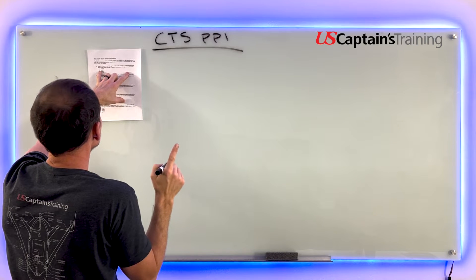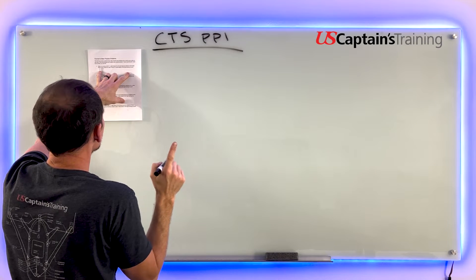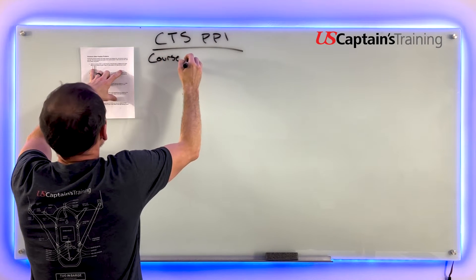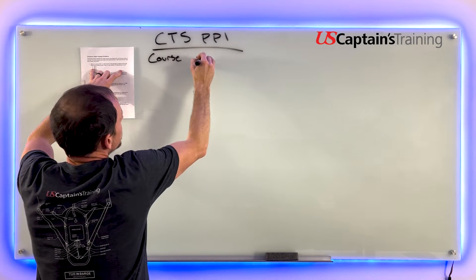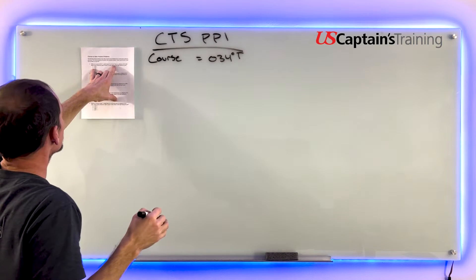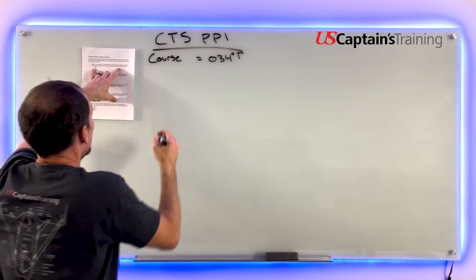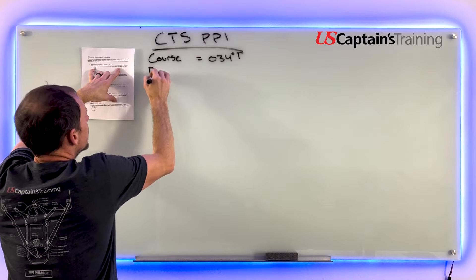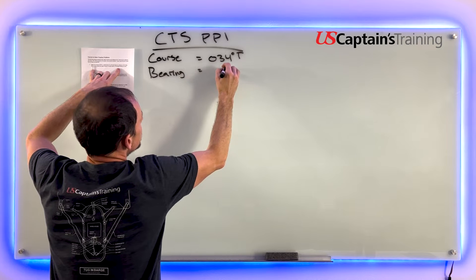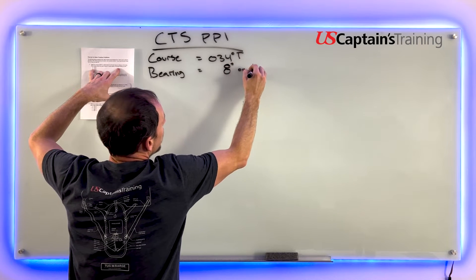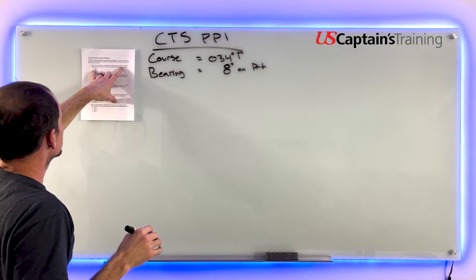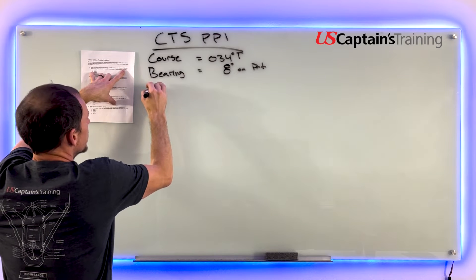A light bears 8 degrees on the port bow at a distance of 8.8 miles. Our course is 34 degrees true, then it says a light bears 8 degrees on the port bow, so our bearing equals 8 degrees on the port side.